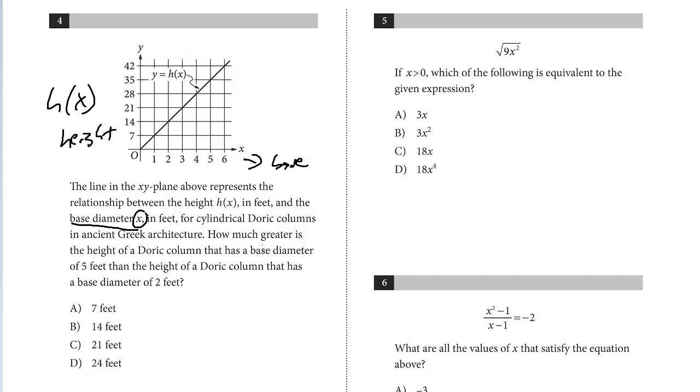We want to compare the difference, base diameter of 5. Here's 5. We go straight up and that is 35 versus a height of 2. Here's 2, we go straight up, that is 14. So the difference, 35 minus 14 is 21. The answer is C.